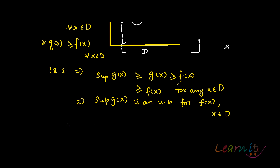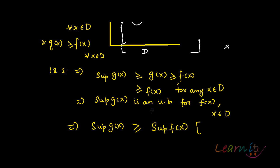What does that imply? That implies that the supremum of g(x) will be greater than or equal to the supremum of f(x). Why? Because the supremum of f(x) is the least upper bound, and since sup g(x) is also an upper bound, and sup f(x) is the least upper bound, sup g(x) must be greater than or equal to sup f(x). That is why this theorem holds.